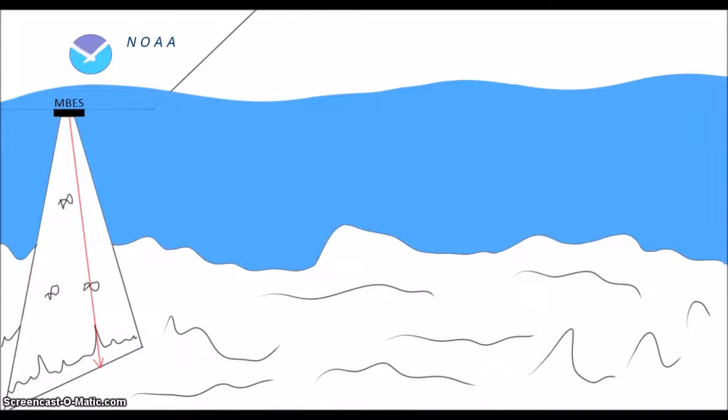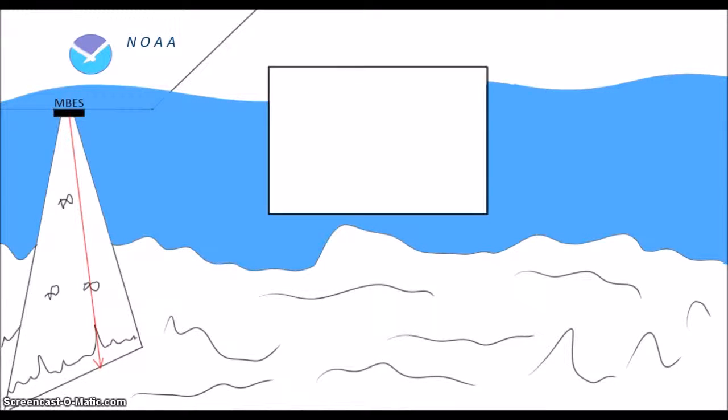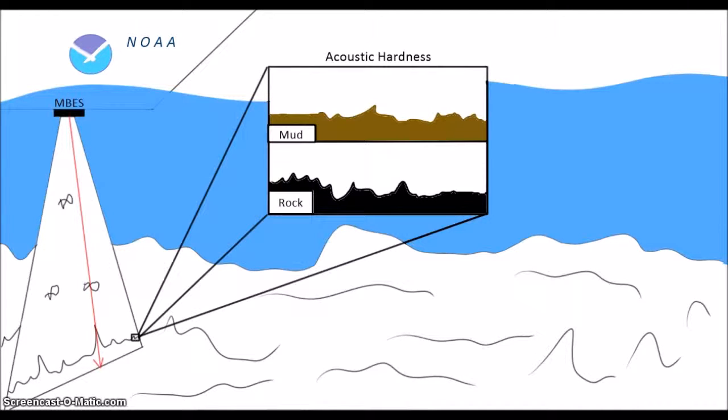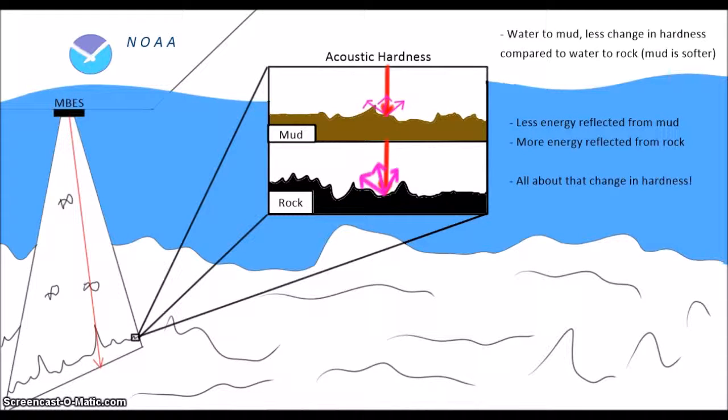The strength of the backscatter can also be useful. Like I mentioned before, the seafloor is usually assumed to be the strongest backscatter out there. That's because it's big, but it's also because of what we would call its change in acoustic hardness. The greater the change in acoustic hardness, the more energy that will be reflected from a surface. When you go from water to mud, that's a moderately big change. But going from water to rock, well that's a huge change in hardness.